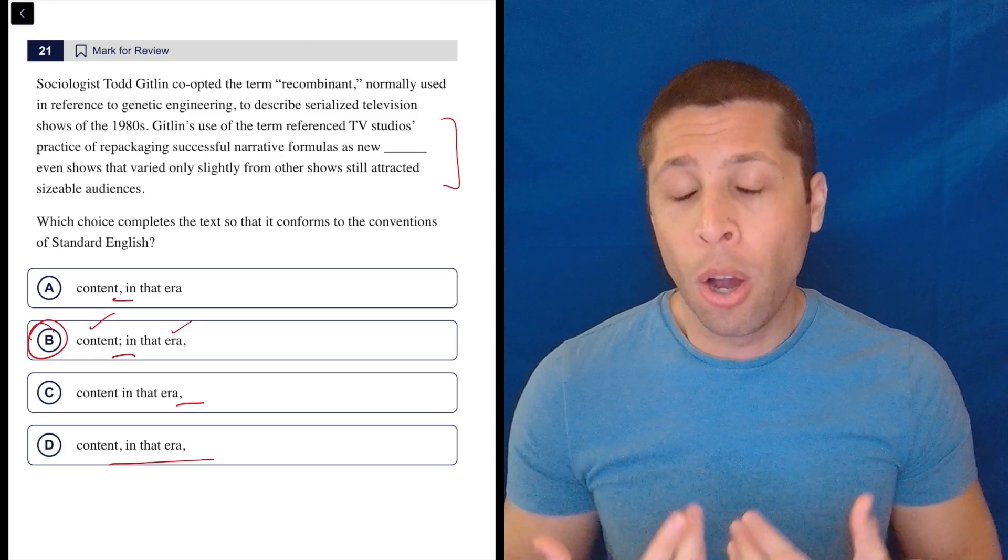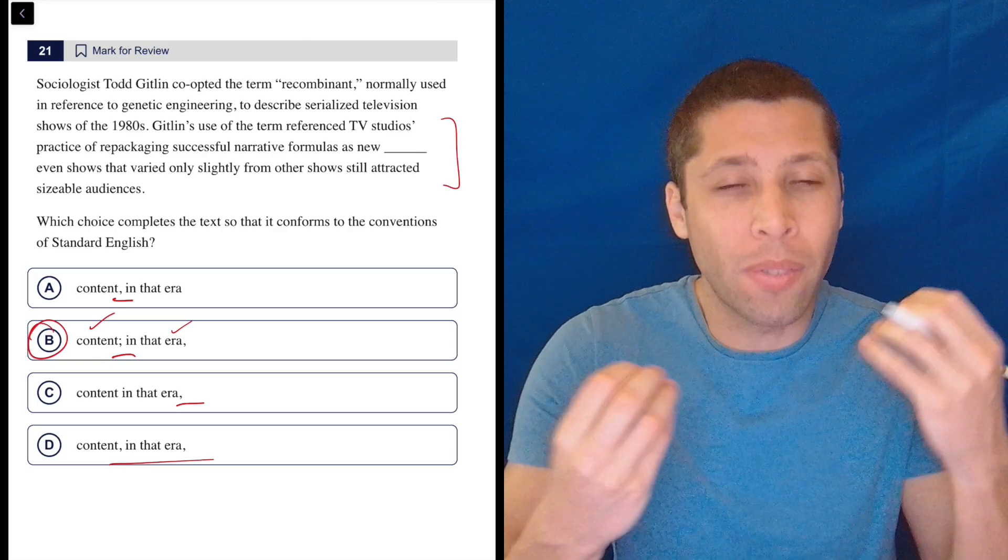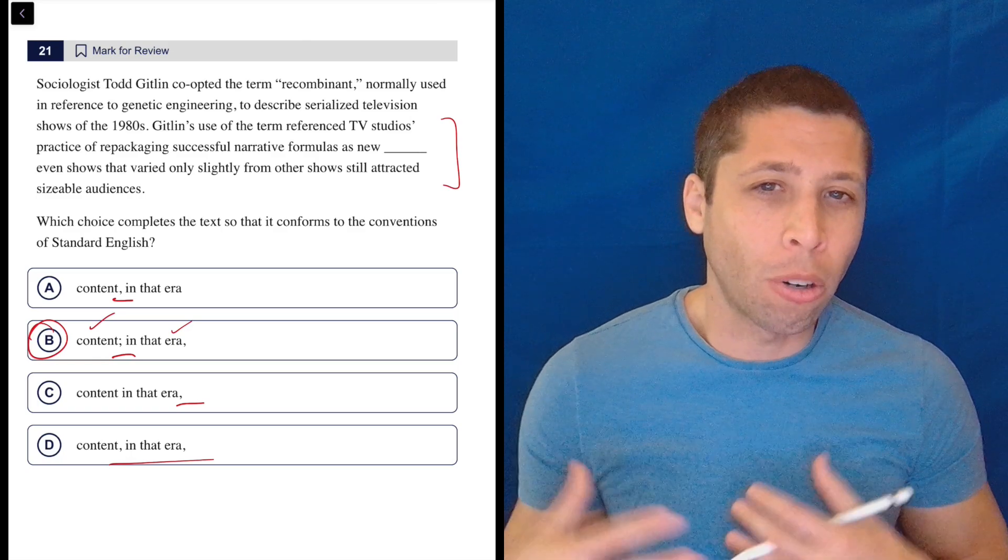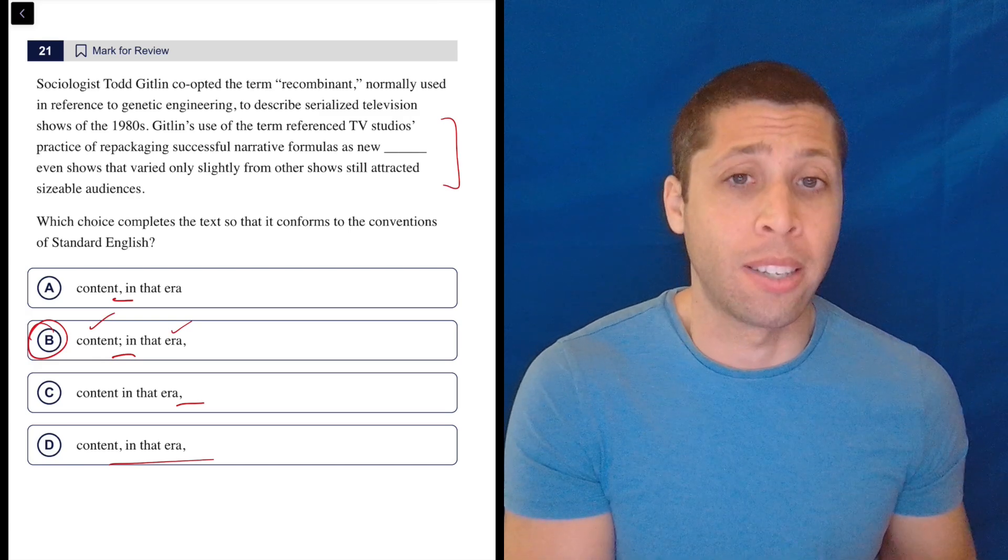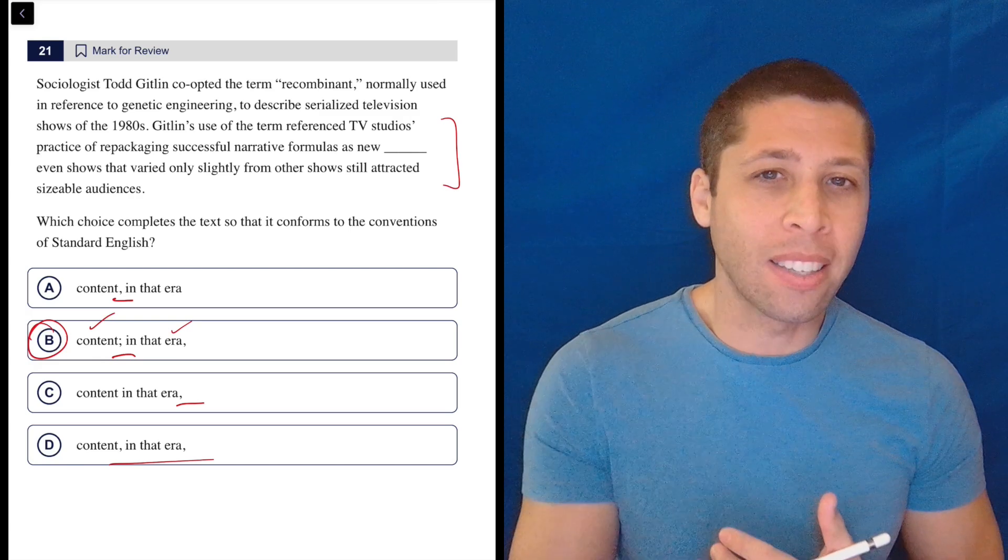But then hopefully in that process, we've also learned where maybe we do need to put some commas because we've kind of listened to the sentence structure and we understand why something wasn't a sentence. So we're not necessarily assuming B is right, but it's the easiest thing to test for.